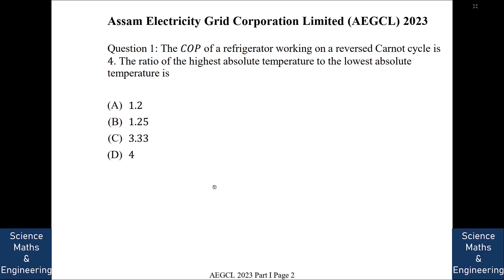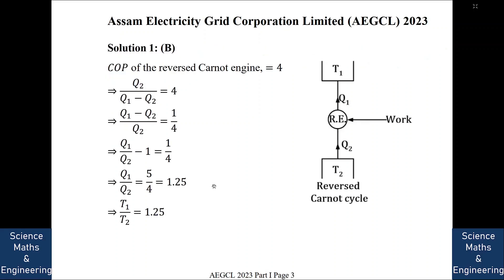The COP of a refrigerator working on a reverse Carnot cycle is 4. The ratio of the highest absolute temperature to the lowest absolute temperature is, the answer is it is 1.25, so let us see how we get it.